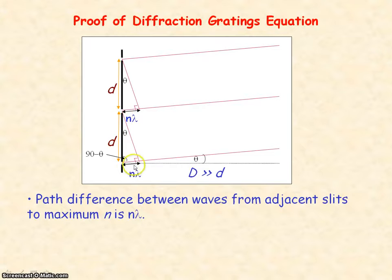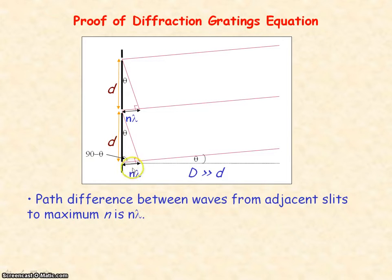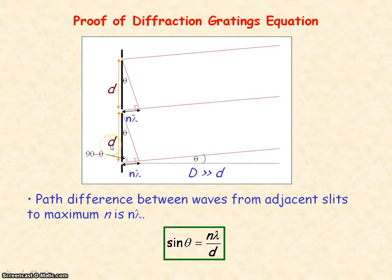We can use trigonometry for this right angle triangle. Relative to the angle, the path difference n lambda is opposite, and distance d is the hypotenuse. So we have opposite over hypotenuse, which means we use the sine term. Sine of theta equals n lambda divided by d. This angle theta is for maximum or diffraction order n.